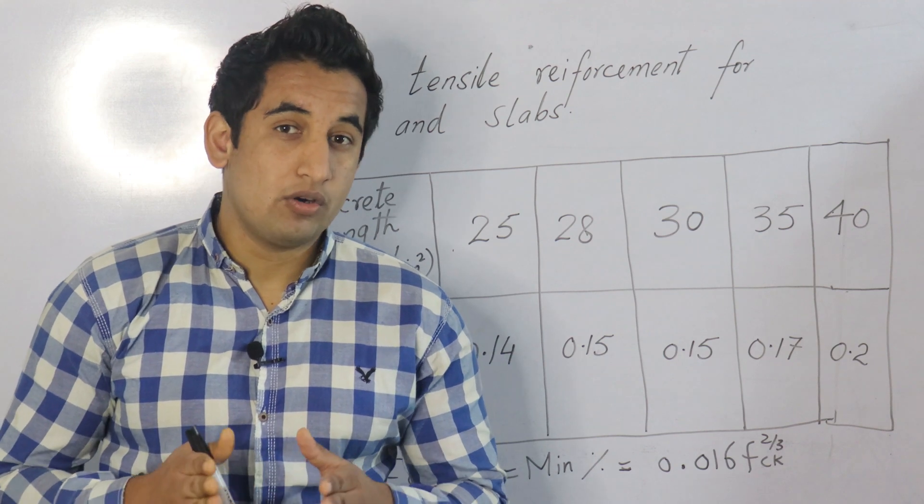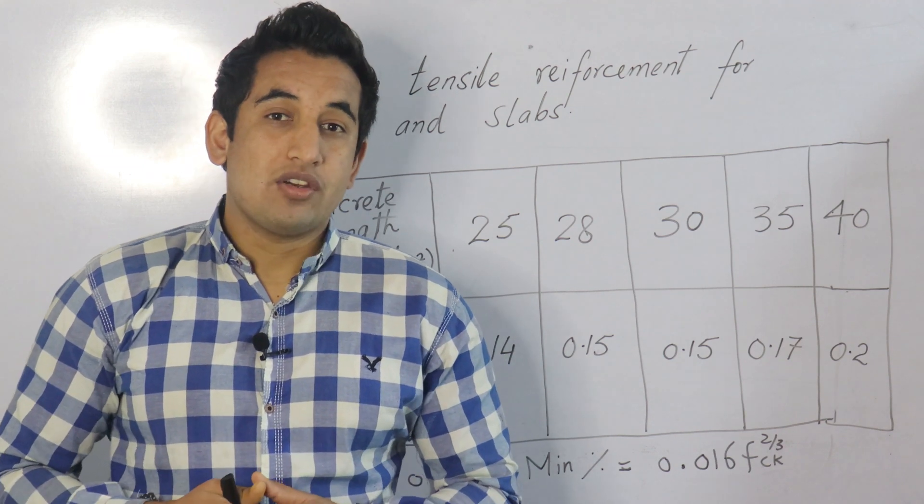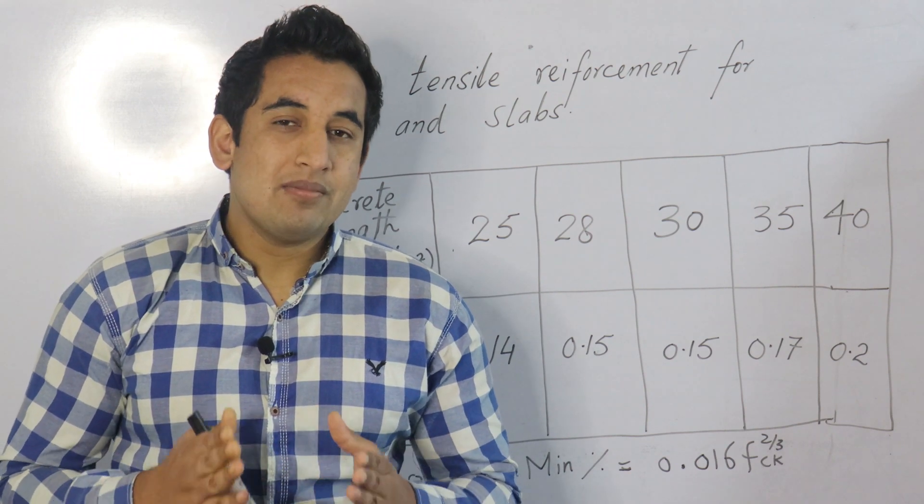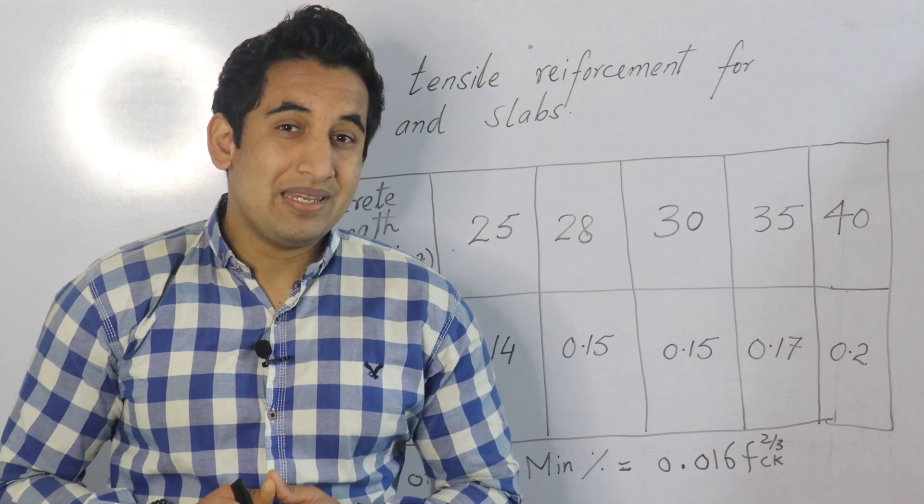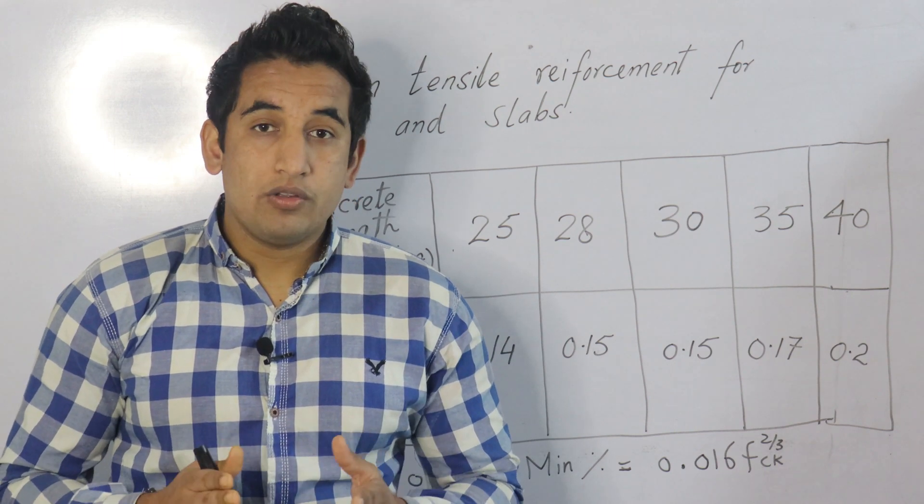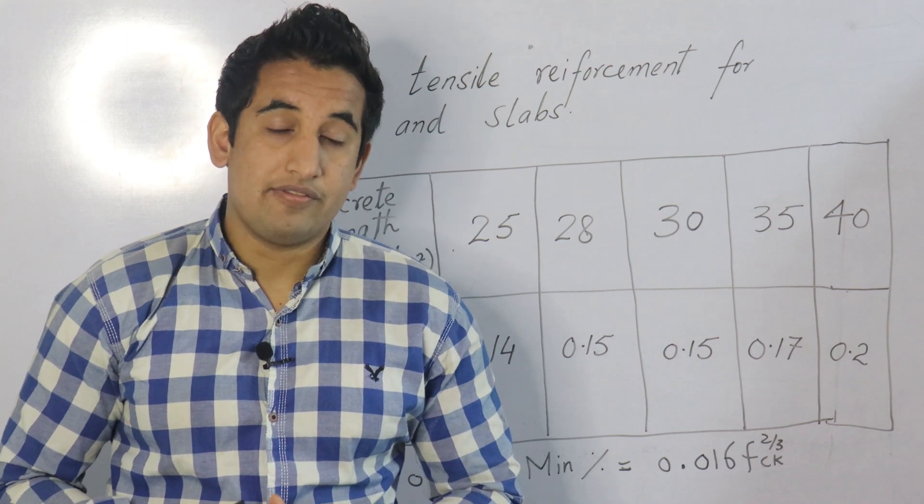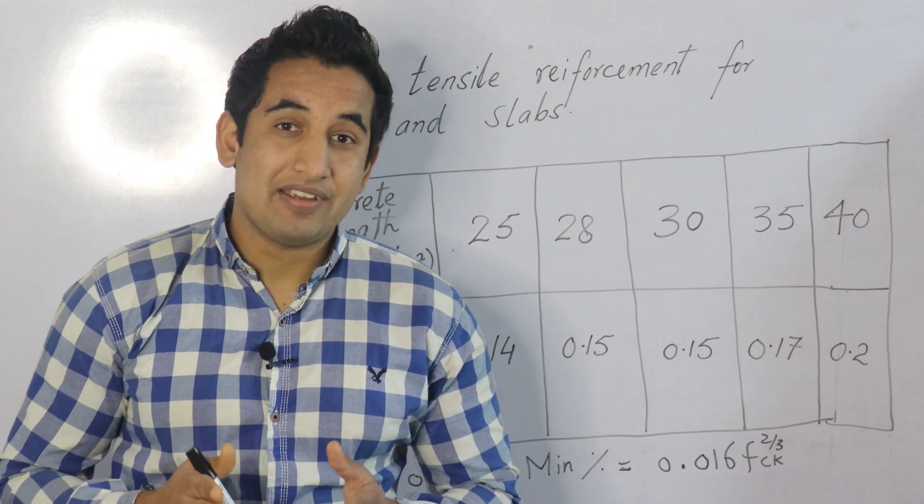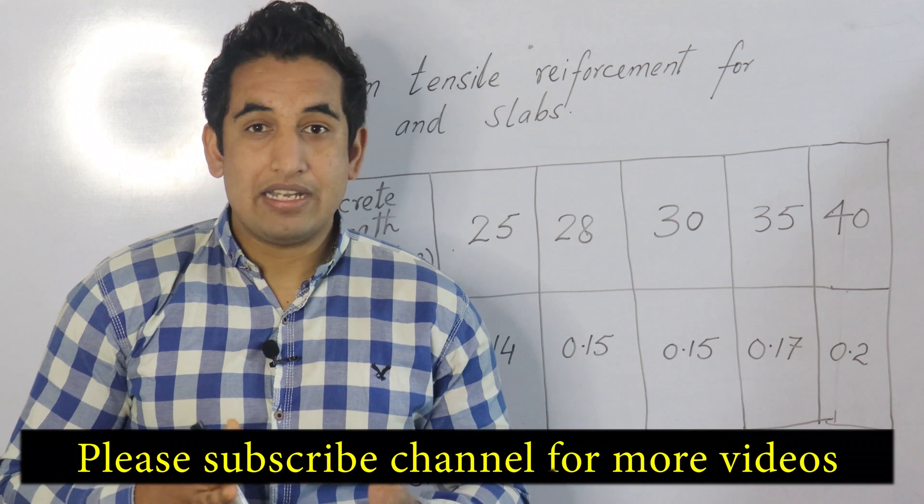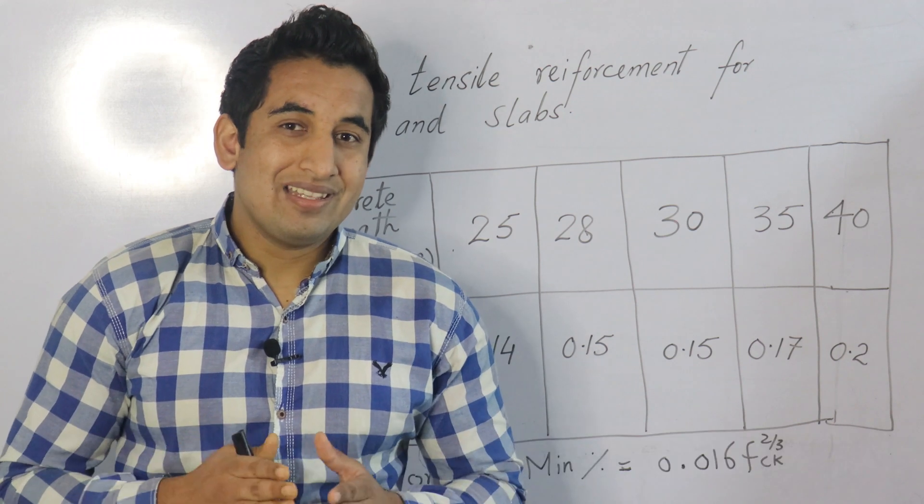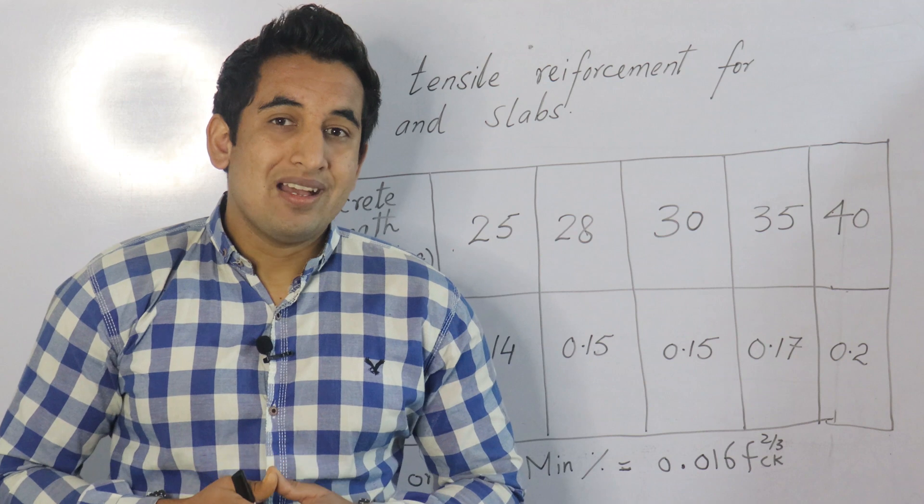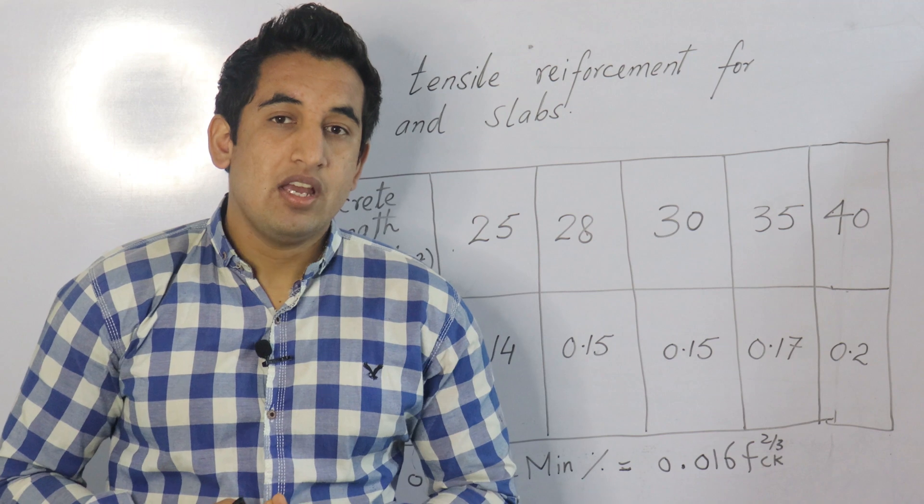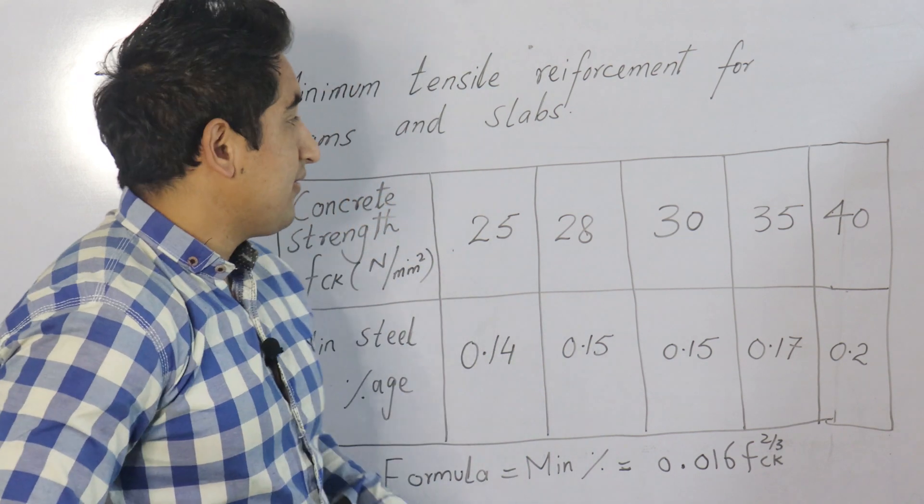Let's get started. In this particular video we are going to learn about the minimum steel that is required for both beams and slabs. Although there are a lot of other requirements that are needed for design of steel, such as the type of loadings, the type of end conditions, and most importantly the grades of concrete, in this formula we are going to see how we can calculate the minimum steel for slabs and beams.